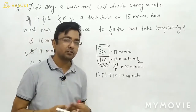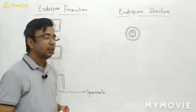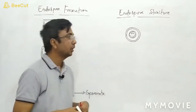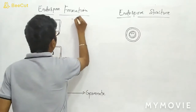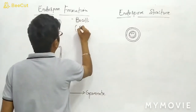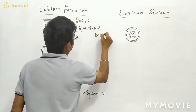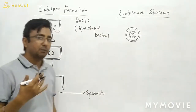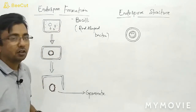After that we will discuss endospore formation. Endospore formation takes place under unfavorable environmental conditions, and endospore formation is shown exclusively by bacilli — that is, rod-shaped bacteria. Rod-shaped bacteria form endospores under unfavorable environmental conditions. Now we will see the process of how it takes place.